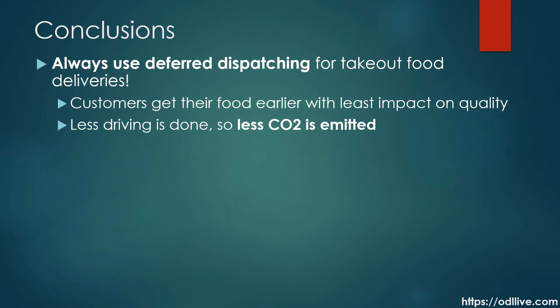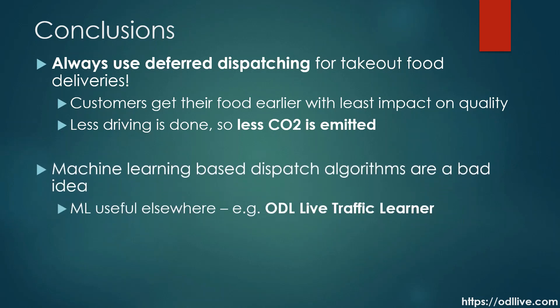Based on these results, we recommend on-demand food delivery companies should always use deferred dispatching, never immediate dispatching. With deferred dispatching, customers get their food earlier and with the least impact on quality. Deferred dispatching is also better for the environment, as it reduces the number of miles driven and the CO2 emitted. Immediate dispatching is often implemented using a machine learning algorithm, whereas deferred dispatching is an optimisation problem that can only be solved using an optimisation algorithm. We therefore advise against using ML-based dispatch algorithms. ML is still useful in other areas though — for example, ODL Live uses ML to estimate traffic patterns as part of its travel time calculation.